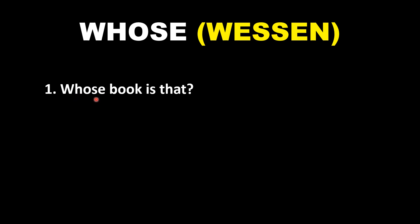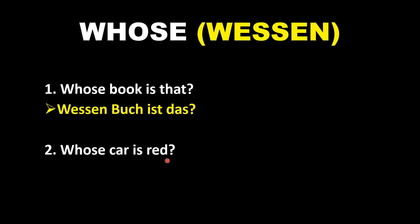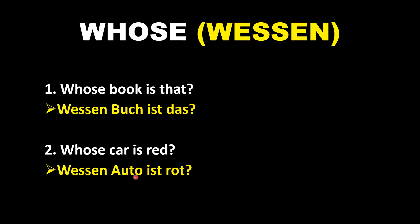The last question word is 'whose' — Wessen. This is the genitive case, which we will learn later on. For now just remember this word Wessen. For example, 'Whose book is that?' — Wessen Buch ist das. Another example: 'Whose car is red?' — Wessen Auto ist rot. Rot means red color in German. The verb used is ist, from the verb sein. So: Wessen Auto ist rot.